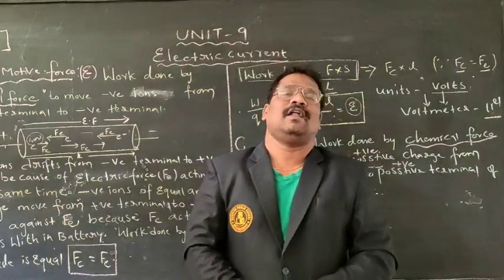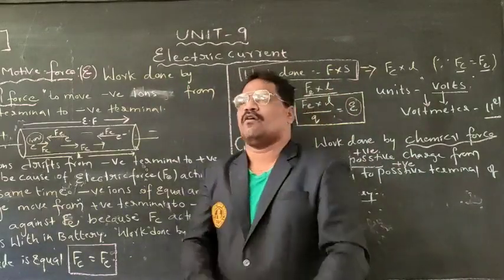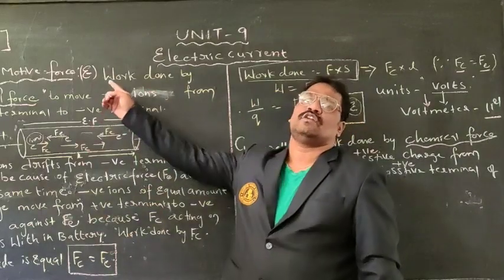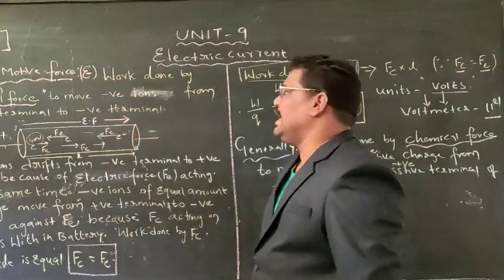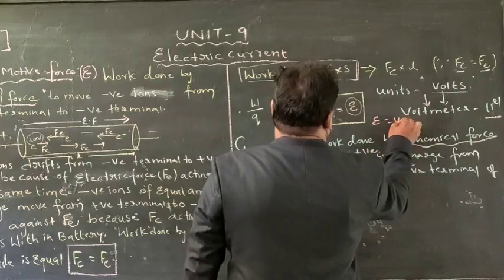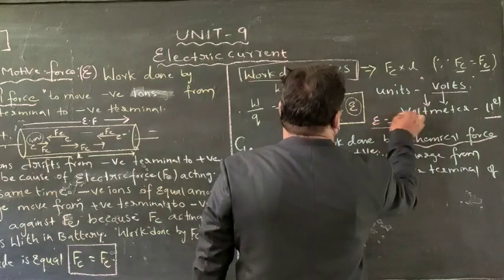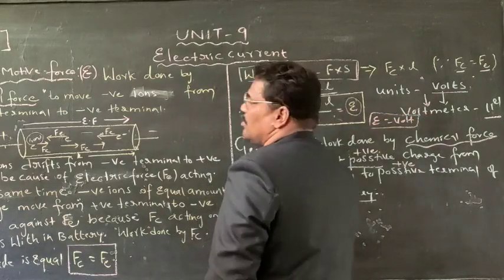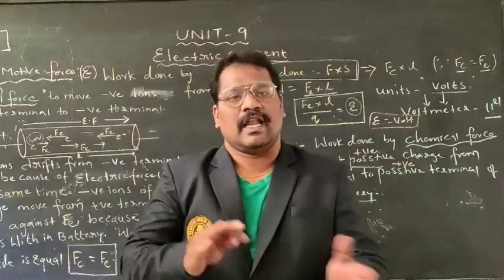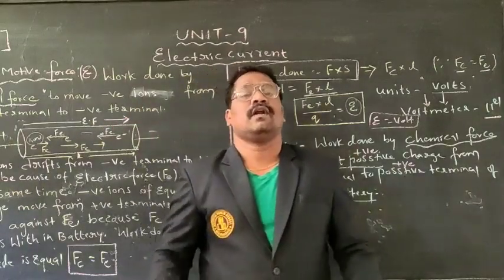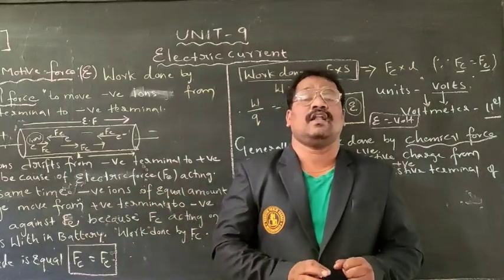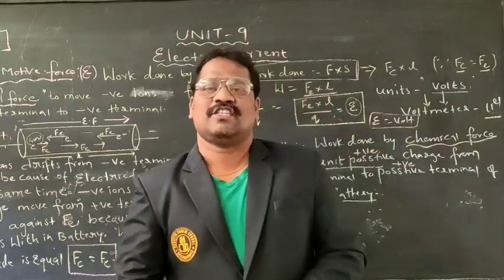By this, we have completed the topic called electromotive force, which is denoted with E. In the next class we will go through the differences between electromotive force and potential difference.